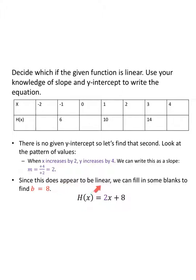Since it appears to be linear, we can fill in some blanks. Adding two to get the next x gives eight, twelve, sixteen. Going the opposite direction, subtract two. When x is zero, y is going to be eight. So the equation is H of x equals two x plus eight.